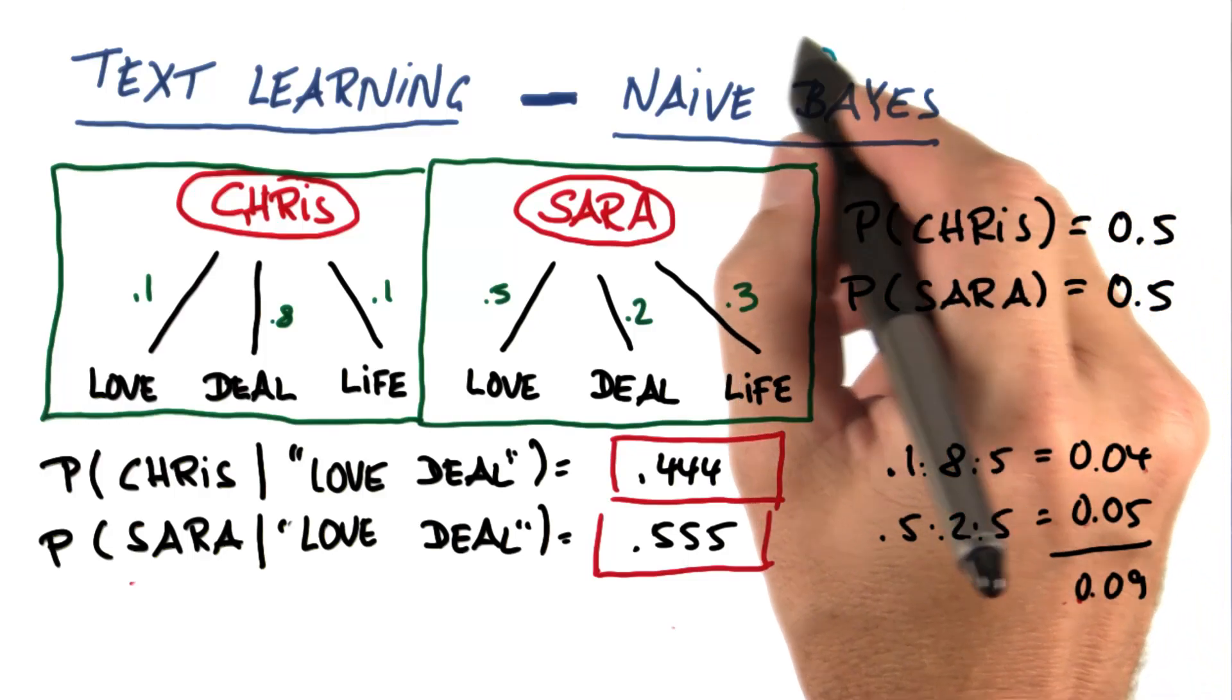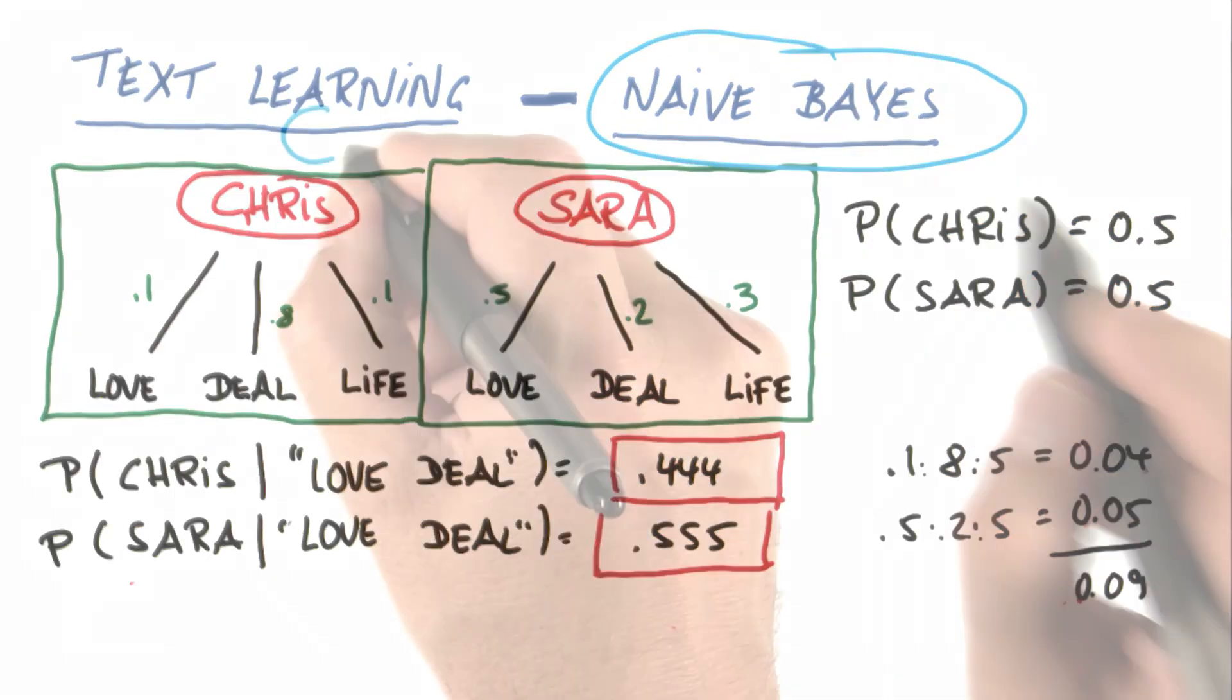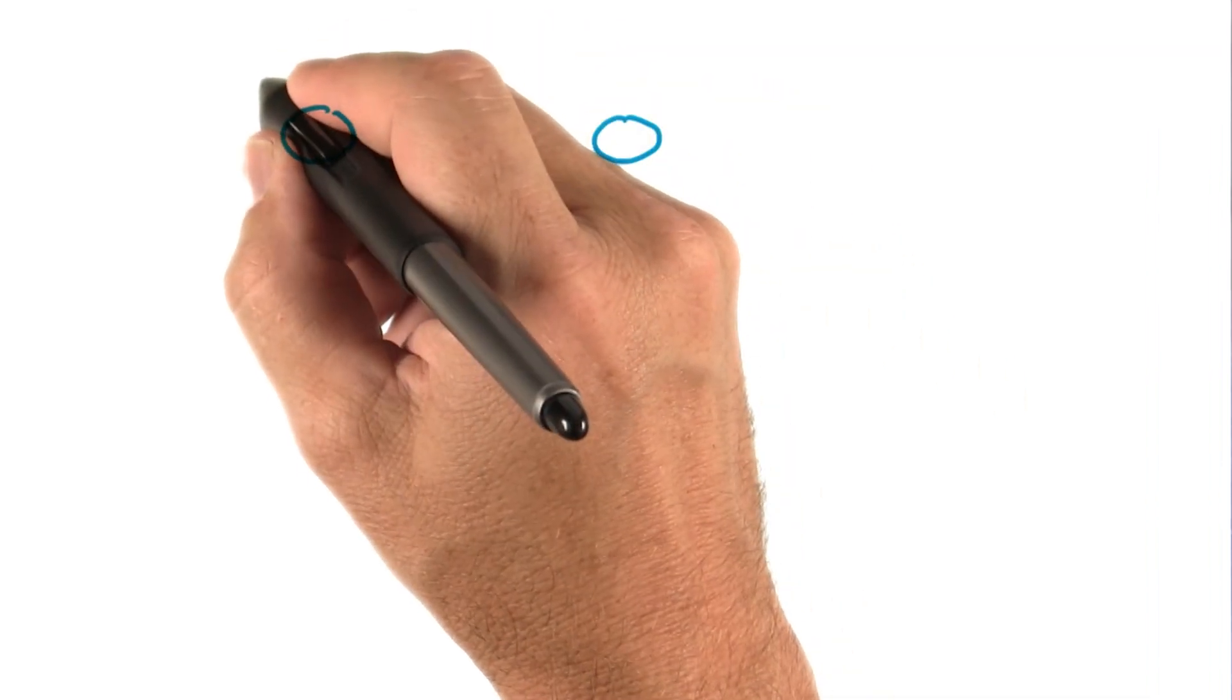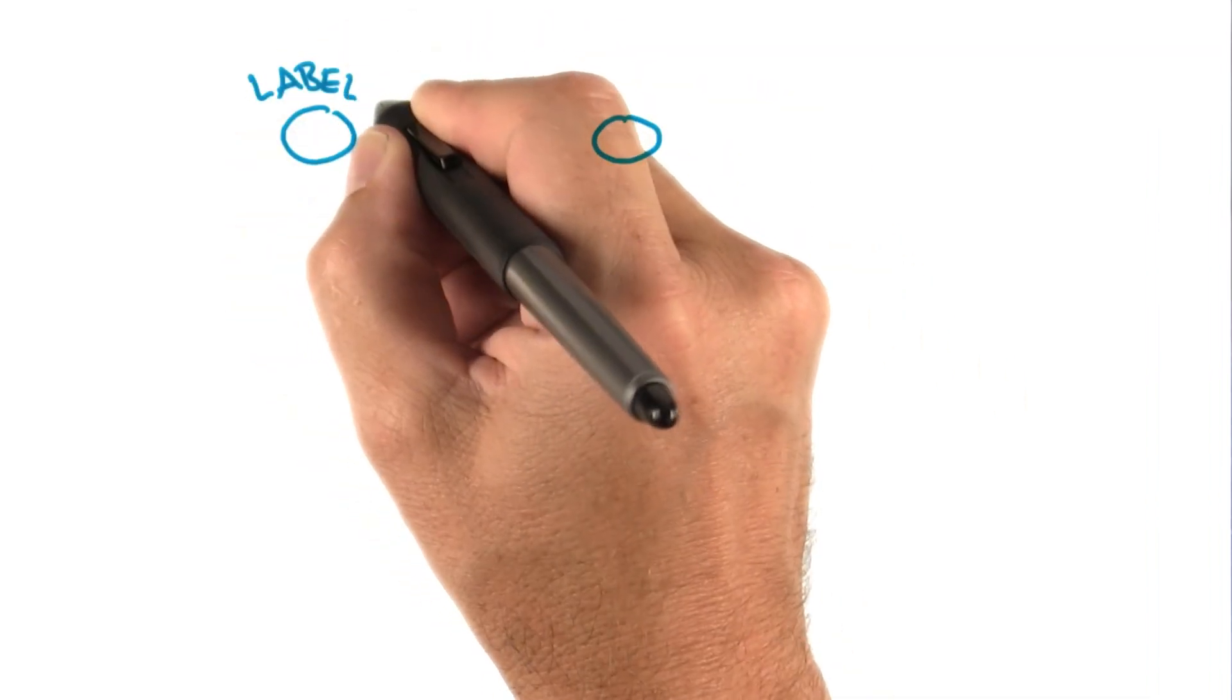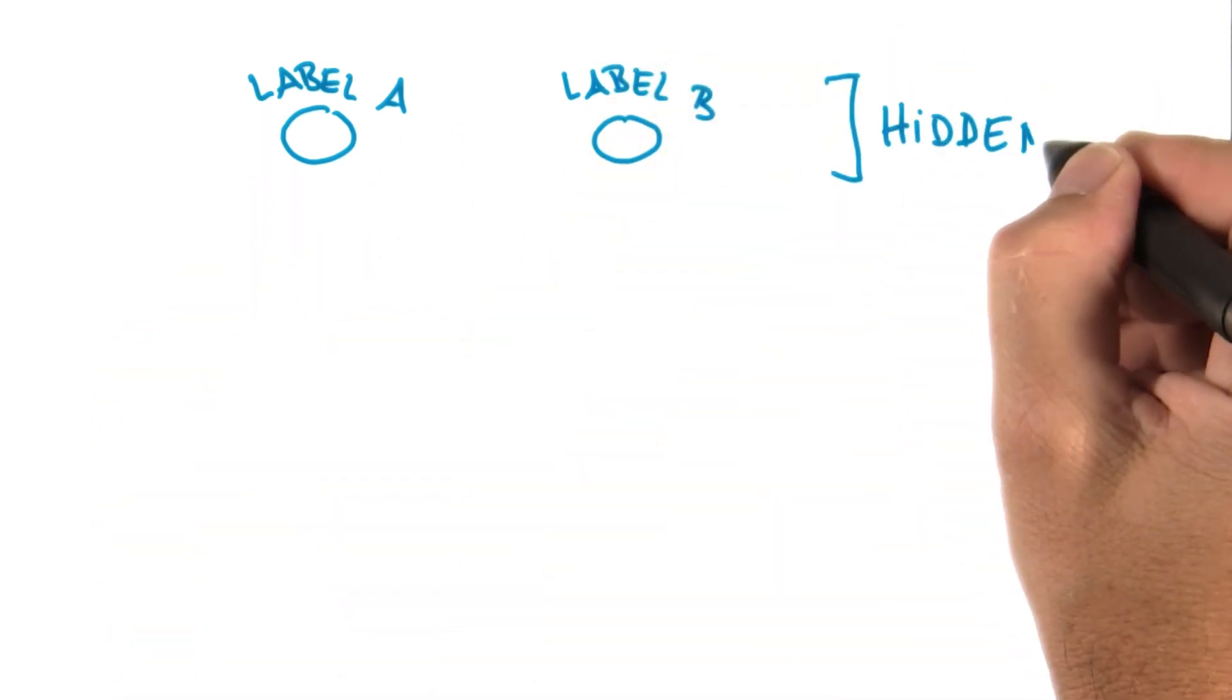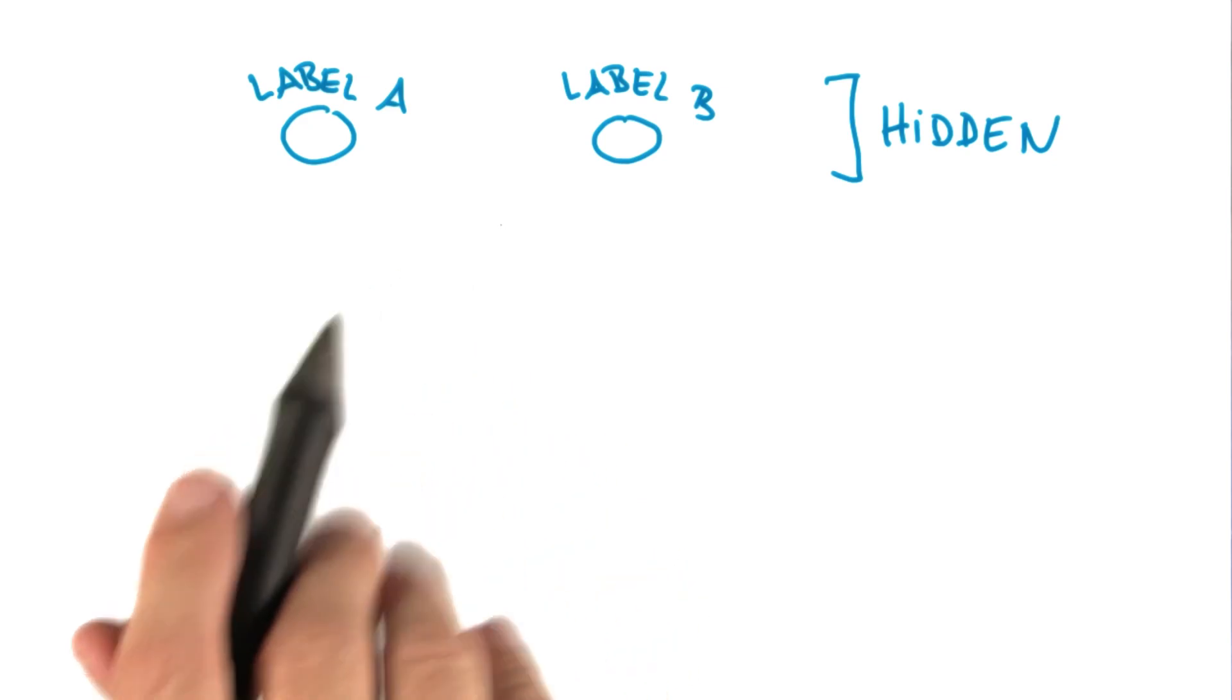So let me just explain to you why this is called naive Bayes. What we've done is we've said there's unknown concepts. These are our target labels. Let's call them label A and label B. And you don't get to see them. They're hidden, as is always the case in supervised learning.